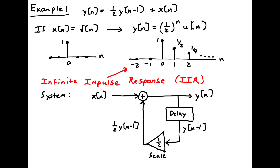A block diagram shows how to implement this system: y of n is the sum of the input x of n and a delayed, scaled version of the output. We take the output, delay it by one sample, scale it by one-half, and add it back to the input. This delay is effectively a memory register — you can think of clocking the output into a storage register, scaling it with an amplifier, and adding it to the next input. This can easily be built using a for loop in a computer program or using hardware memory registers and multipliers.